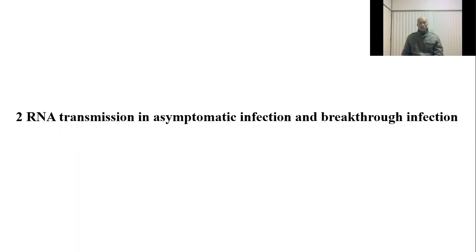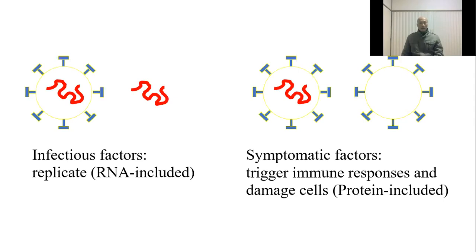I need to address transmission in asymptomatic infection and pre-symptomatic infection. I define RNA-inclusive elements as infectious factors — the effect is replication. I define protein-inclusive elements as symptomatic factors — they can trigger immune response and damage cells.